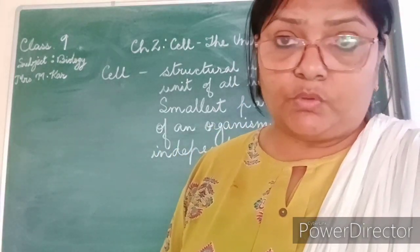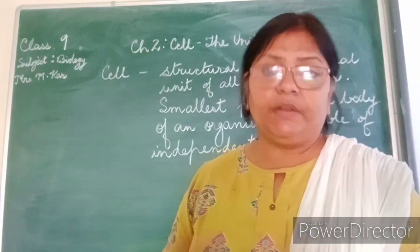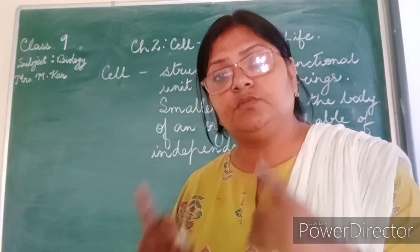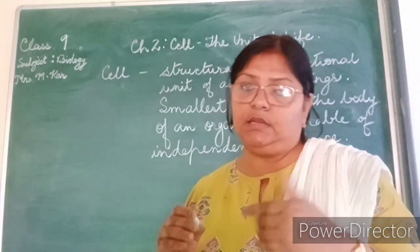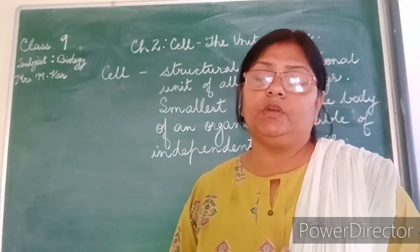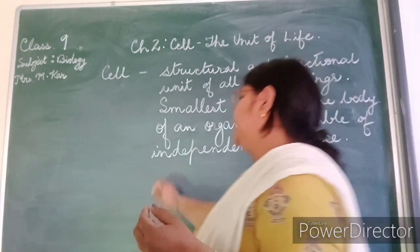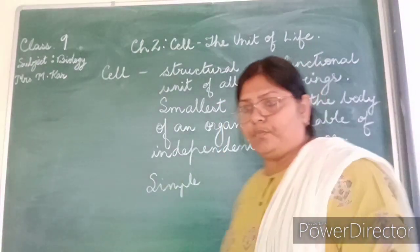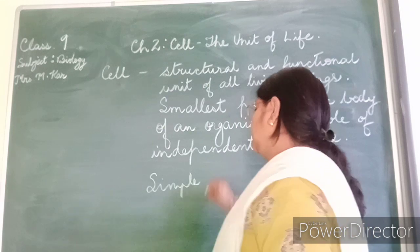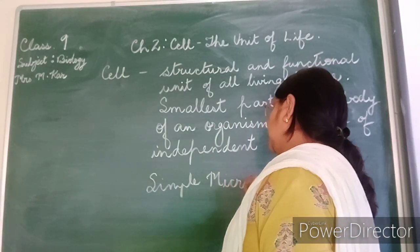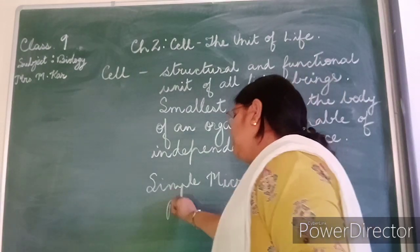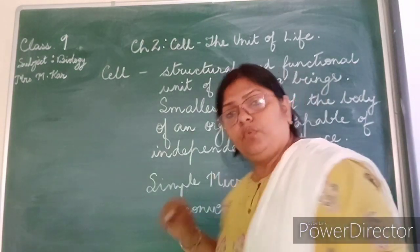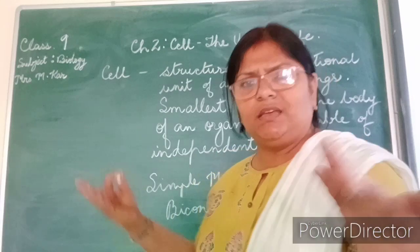These cells are very minute and small, so how did we come to discover them? It is because of some great scientists. A Dutch scientist called Antony van Leeuwenhoek was the first one to see these cells in magnified form underwater. He used a simple microscope which he had discovered, and it had a biconvex lens.